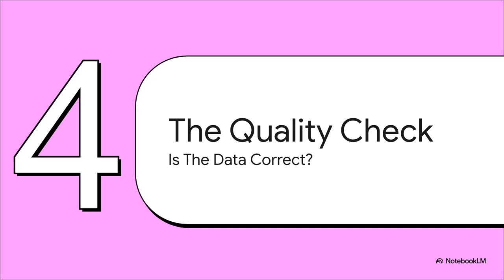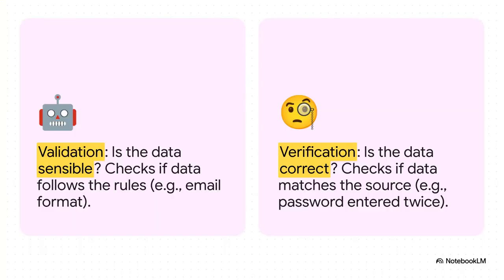Our data has made it — it's arrived at the server safe and sound. But before it gets filed away, it's got to pass a quality inspection. We can't have any junk data getting in. This brings us to two words that sound super similar but are totally different: validation and verification. Validation is the computer checking if the data follows the rules — like, does your email address have an at symbol in it? Verification, on the other hand, is about checking for human error. When a site makes you type your new password twice, that's verification — it's checking that you didn't make a typo.